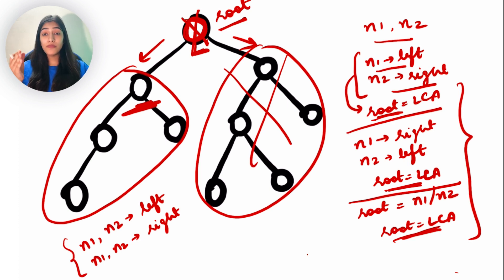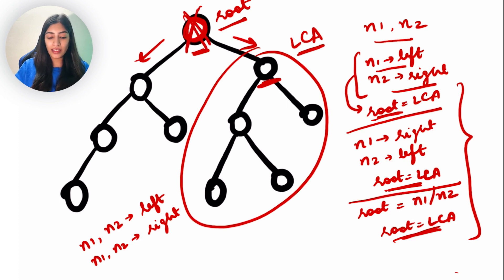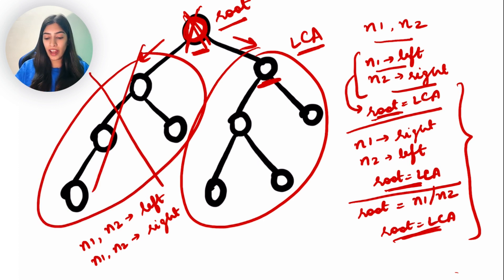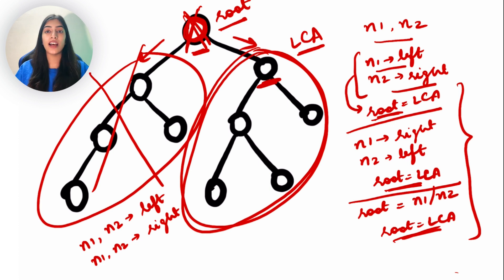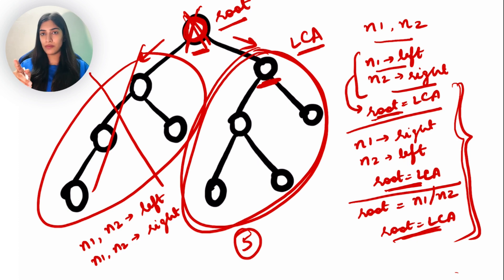Similarly, if both N1 and N2 are in the right subtree, we discard the left side and recurse with the right child as the new root. We then again check the same conditions: left subtree, right subtree, or one of the three root-is-LCA conditions. So in total we have five cases: both on the left, both on the right, one on each side (two sub-cases), and root equals one of the nodes.